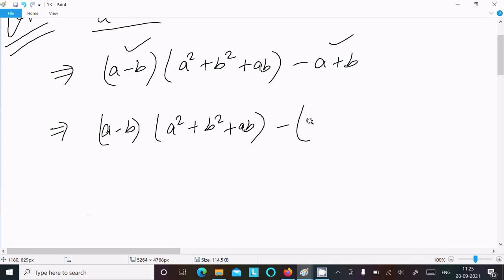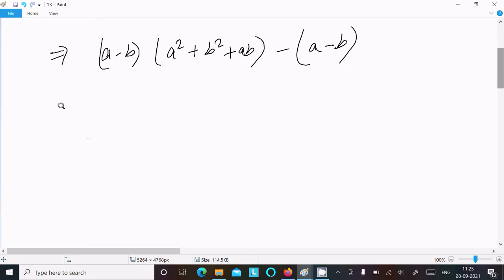am going to take the minus common. So this is minus minus plus, plus minus minus b. Now from this, here you can see a-b, a-b, so a-b is the common. Take that. Now